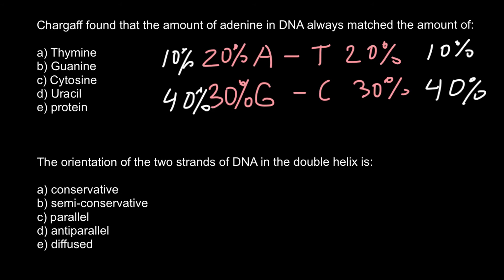All representatives of the same species have the same proportions of adenine, thymine, guanine, and cytosine. As you can see in this picture, the amount of adenine always equals the amount of thymine, and now we know that adenine base pairs with thymine — that is the explanation for the equal amounts.